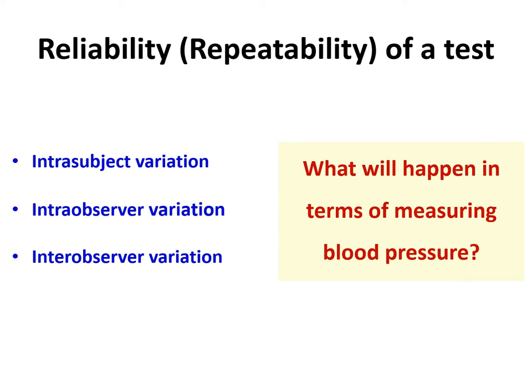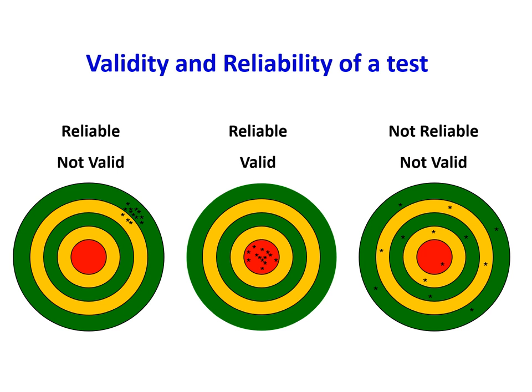For example, with blood pressure measurement: if you measure an individual's blood pressure in the morning, afternoon, and evening, you get different measurements — that is intra-subject variation. If one person measures someone's blood pressure twice in the same sitting and gets slightly different results due to technique, that is intra-observer variation. If you and a colleague both measure the same patient's blood pressure at the same time and get different readings due to technique or different equipment, that is inter-observer variation.